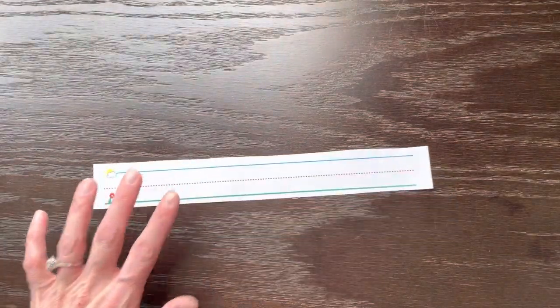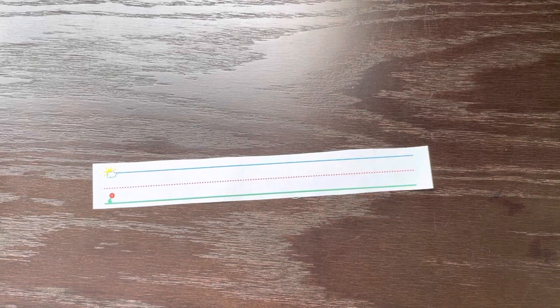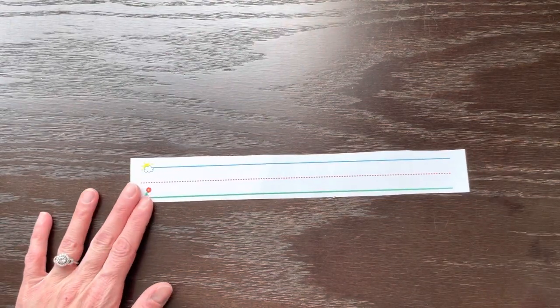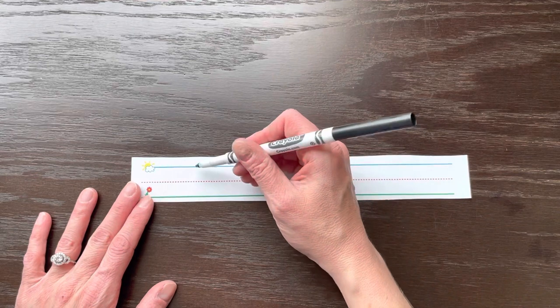Let's learn how to write a W. A capital W starts at the top just like all capital letters. W is made from a bunch of diagonal lines or what we call slide lines.